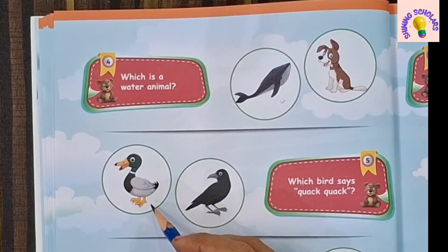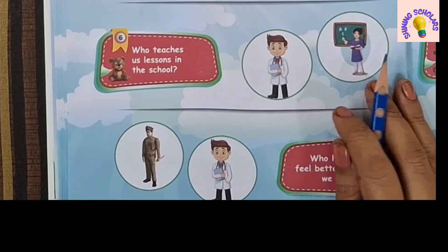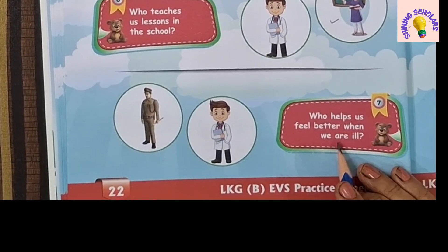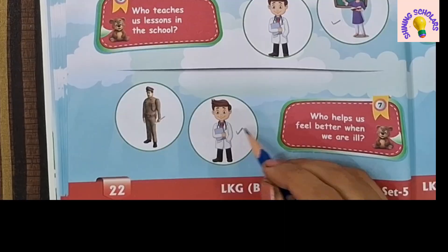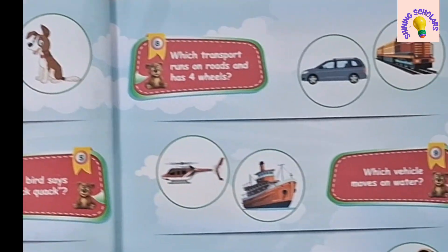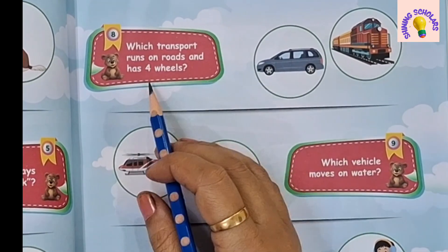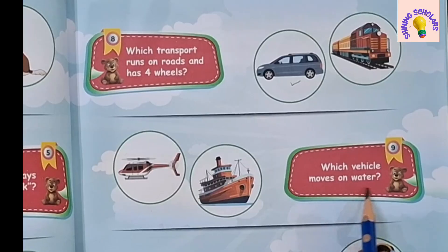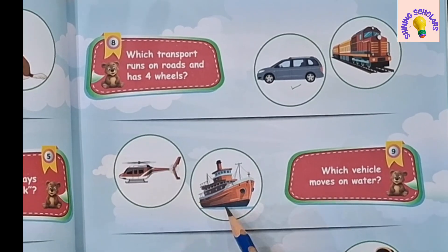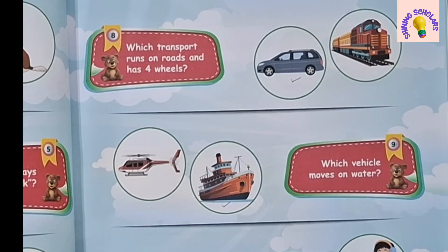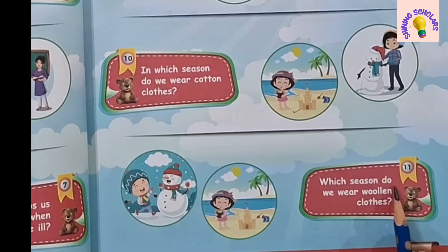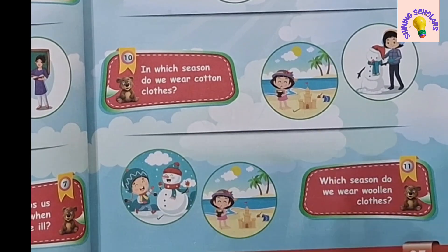Which bird says quack quack? Duck. Who teaches us lessons in school? Teacher. Who helps us feel better when we are ill? Doctor. Which transport runs on roads and has four wheels? Car. Which vehicle moves on water? Ship. In which season do we wear cotton clothes? Summer season. Which season do we wear woolen clothes? Winter season.